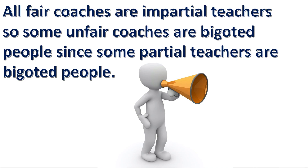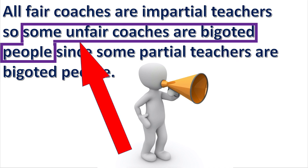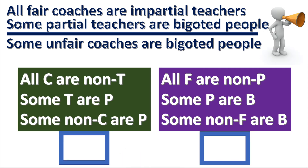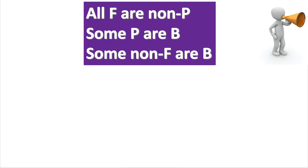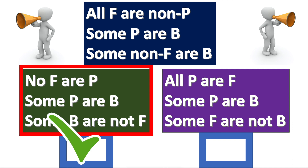Next practice problem. Identify the conclusion. This is the conclusion — the word 'so' is the indicator word. Next, symbolize the terms. This is the correct symbolization. Next, reduce the number of terms by eliminating the negations. This is the correct reduction.